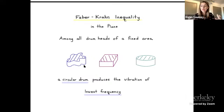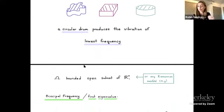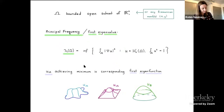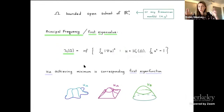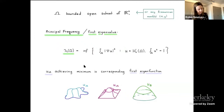More mathematically and more generally, the Faber-Krahn inequality involves the following. When we say the frequency of lowest vibration, we define this as follows: take some bounded open subset omega of Euclidean space of any dimension, or more generally in a Riemannian manifold. Then the principal frequency, or the first eigenvalue of the Dirichlet Laplacian, denoted lambda one of omega, is given by minimizing the Dirichlet energy among functions that vanish on the boundary of omega and are normalized with L2 norm equal to one. This infimum is achieved by a function u omega, the corresponding first eigenfunction of the Laplacian with Dirichlet boundary data.